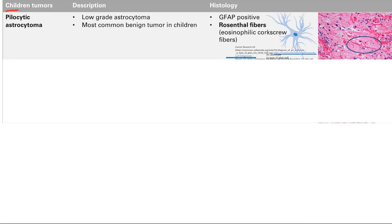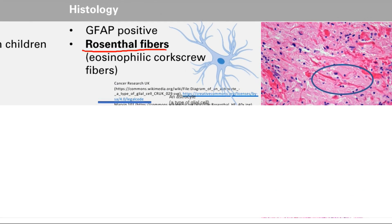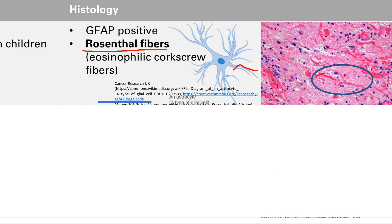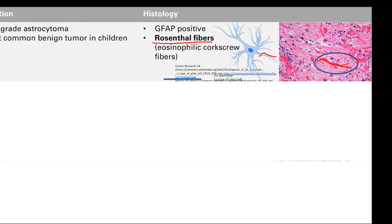Now switching to children's tumors. The first one is the pilocytic astrocytoma — also from astrocytes, but this one's a low-grade tumor compared to GBM, which was high-grade. This is the most common benign tumor. It's GFAP positive. The key thing here is Rosenthal fibers, which are basically the long processes of the astrocytes. The astrocyte looks like a star with long processes, and these Rosenthal fibers are eosinophilic corkscrew fibers.